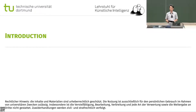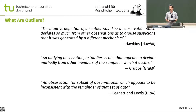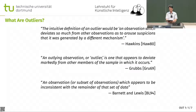Here are some brief introductions to outlier detection. Some definitions from the literature — a very classic definition from the 80s: Hawkins defines an outlier as an observation which deviates so much from the other observations as to arouse suspicions that it was generated by a different mechanism.